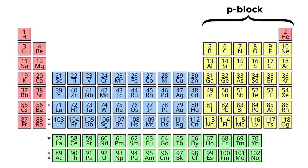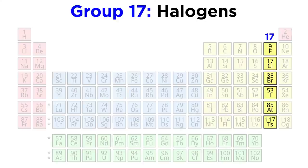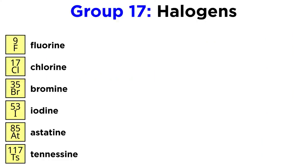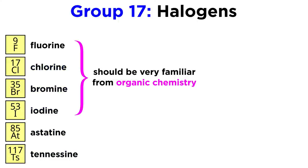We are almost at the end of the P block now, having arrived at group 17, which are known as the halogens. This group includes fluorine, chlorine, bromine, iodine, astatine, and tennessine. All but the last two of these elements should be extremely familiar from organic chemistry, as these first four are ubiquitous in organic synthesis.